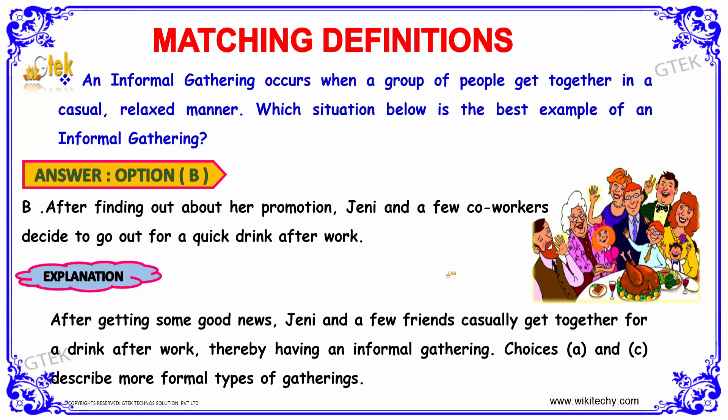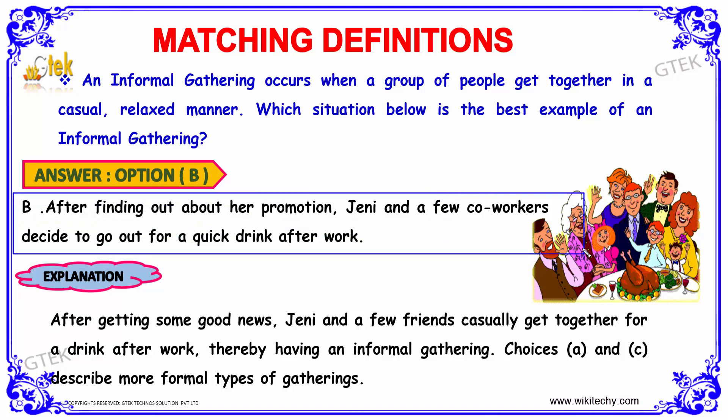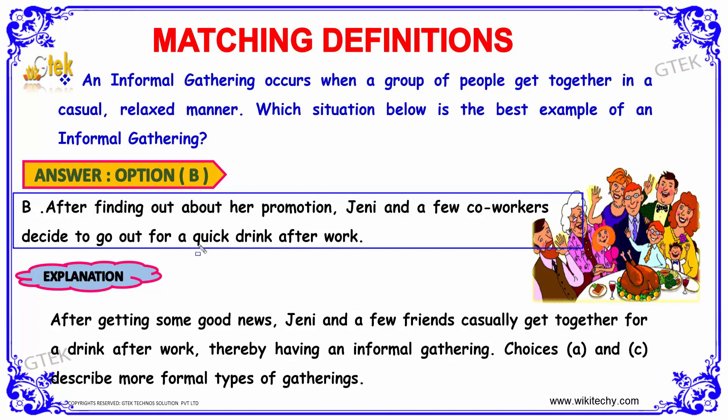The answer is option B. After finding out about her promotion, Jenny and a few co-workers decide to go out for a quick drink after work. This situation is the best example of an informal gathering, which has popped up suddenly and casually.